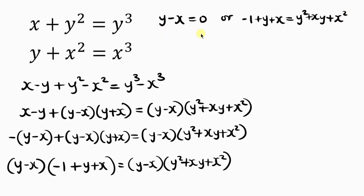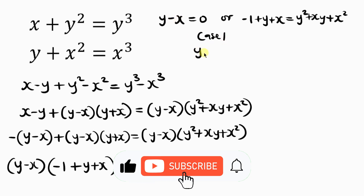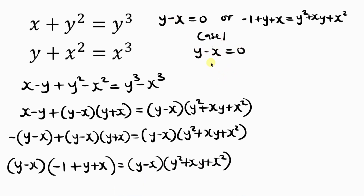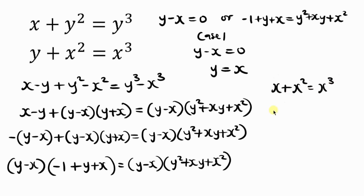Let's start with Case 1: y minus x equals 0, which means y equals x. I can substitute this into the first equation, replacing y with x. So I get x plus x squared equal to x cubed, and moving everything to the right-hand side gives x cubed minus x squared minus x equals 0.